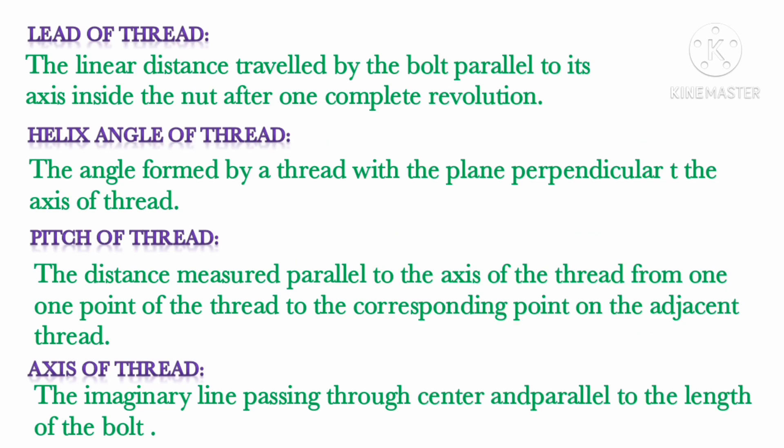Lead of the thread is the linear distance traveled by the bolt parallel to the axis of the thread inside the nut after one complete rotation. If you make one complete revolution (360 degrees) of the nut, whatever linear distance the nut covers parallel to the axis is known as the lead of the thread. In a single-start thread it is equal to the pitch, but for a multiple-start thread it equals n times the pitch — for example, a double-start thread has a lead equal to two times the pitch.